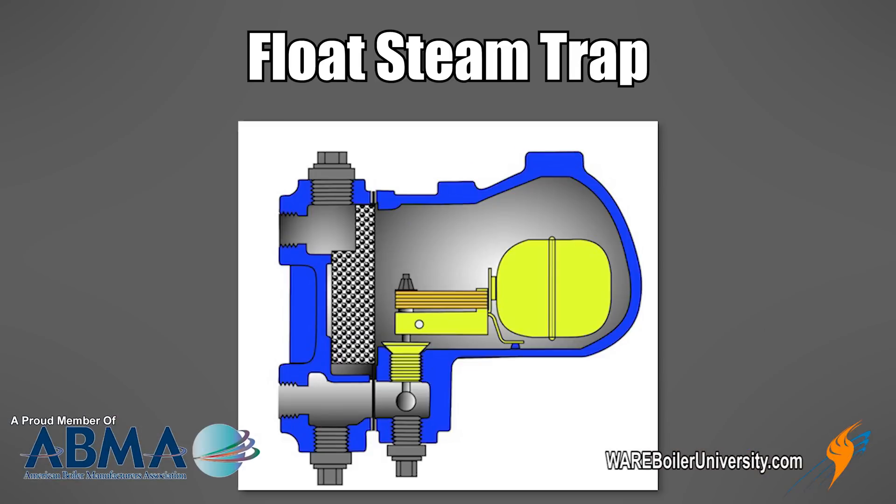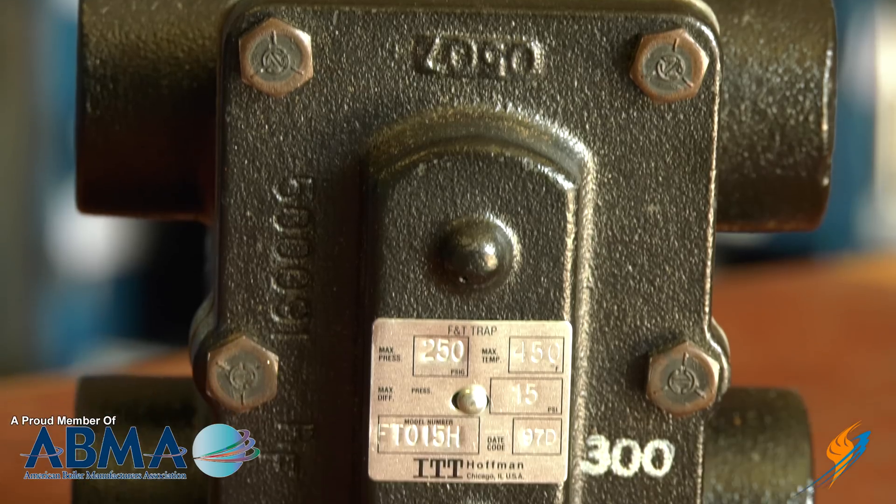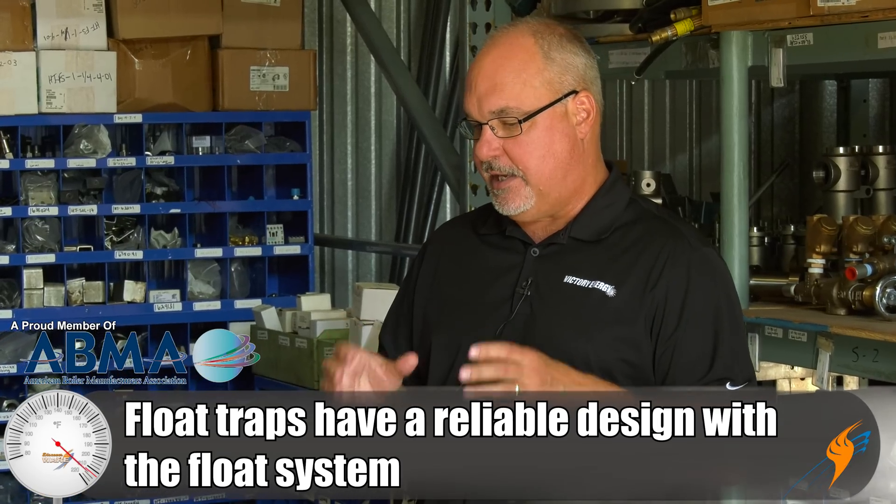The float trap is great for processes — meaning you have it at your heat exchanger or whatever device is utilizing the steam. It's got a very reliable design where the float moves up and down. Every time the condensate builds, it'll open and let the condensate go back. But in the case of startups, or if this particular device is off for periods of time and cools down with air trapped in it, the thermostat working off of temperature will allow that air to evacuate and get it back to functioning normally. So it's pretty unique in a process-type environment — we use them quite a bit for that.